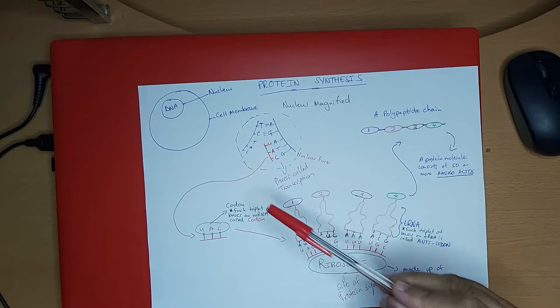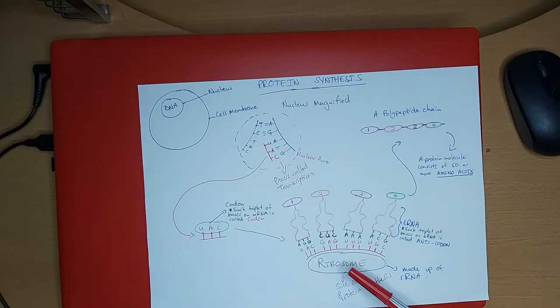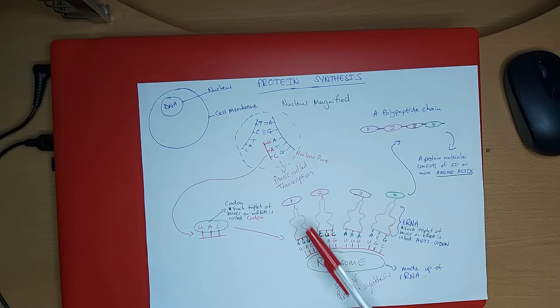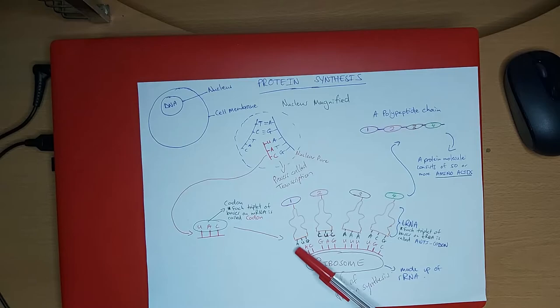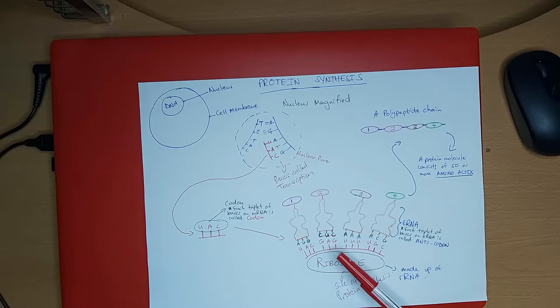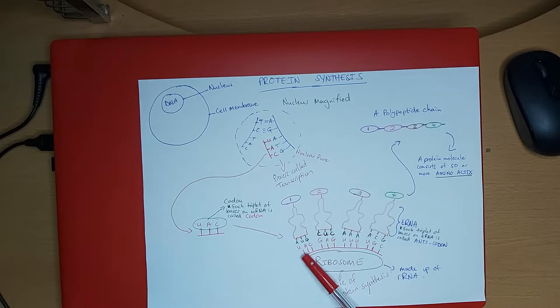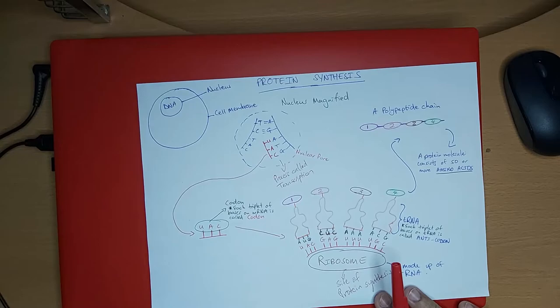The fourth step is: the mRNA attaches itself to the ribosome with its bases exposed — you can see UAC, UAC, UAC — so the bases are exposed to the cytoplasmic environment. Each triplet here, UAC, is called a codon because it is a triplet of bases found on the mRNA. We have four different codons exposed here.